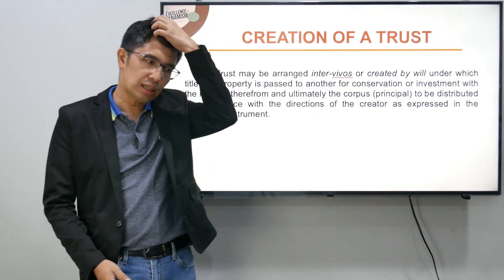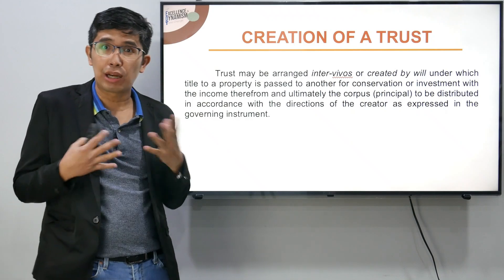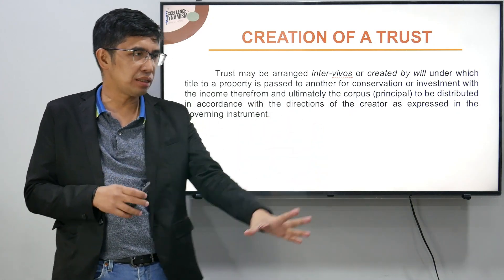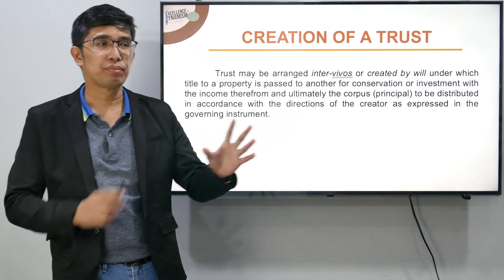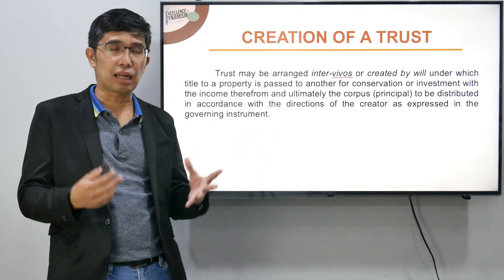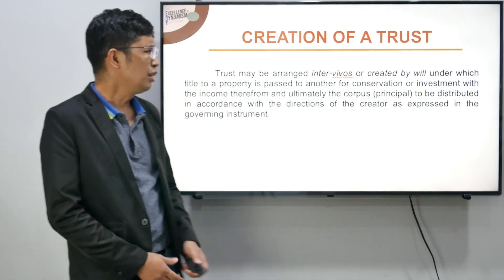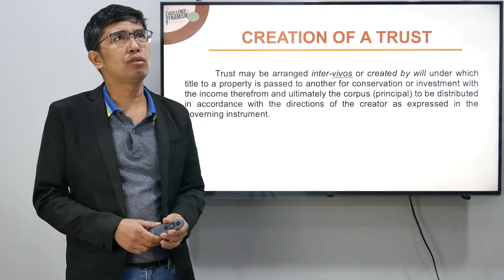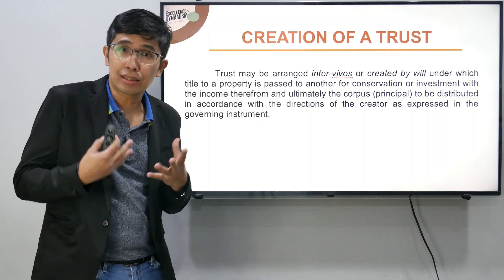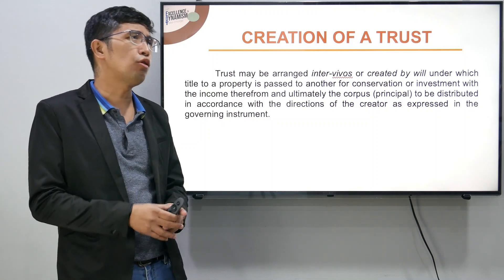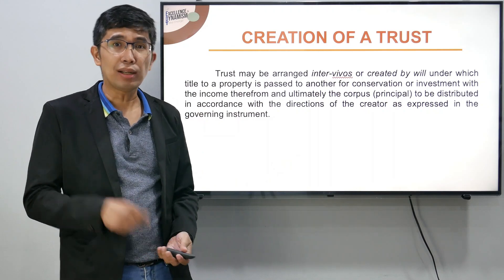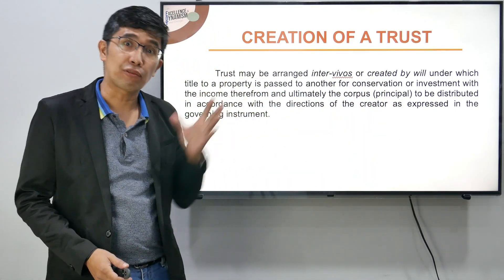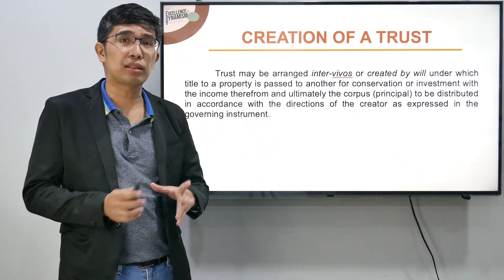Balikan natin yung picture: medyo may edad na yung grantor pero buhay pa. Nung ginawa niya yung trust agreement na kung saan pinagkatiwala niya sa ibang tao yung property niya at yung property na yun ay intended sa isa sa mga apo niya — during that time buhay pa siya, buhay din yung beneficiary — so the trust agreement was created inter-vivos. Trust may also be created by will: halimbawa, gusto niya na pag siya ay namatay na, mapunta ang property sa isa niyang apo. Gagawa siya ng last will and testament. Ang difference: sa inter-vivos it will take effect during his lifetime; sa by will, the transfer will take effect pag siya ay namatay na.